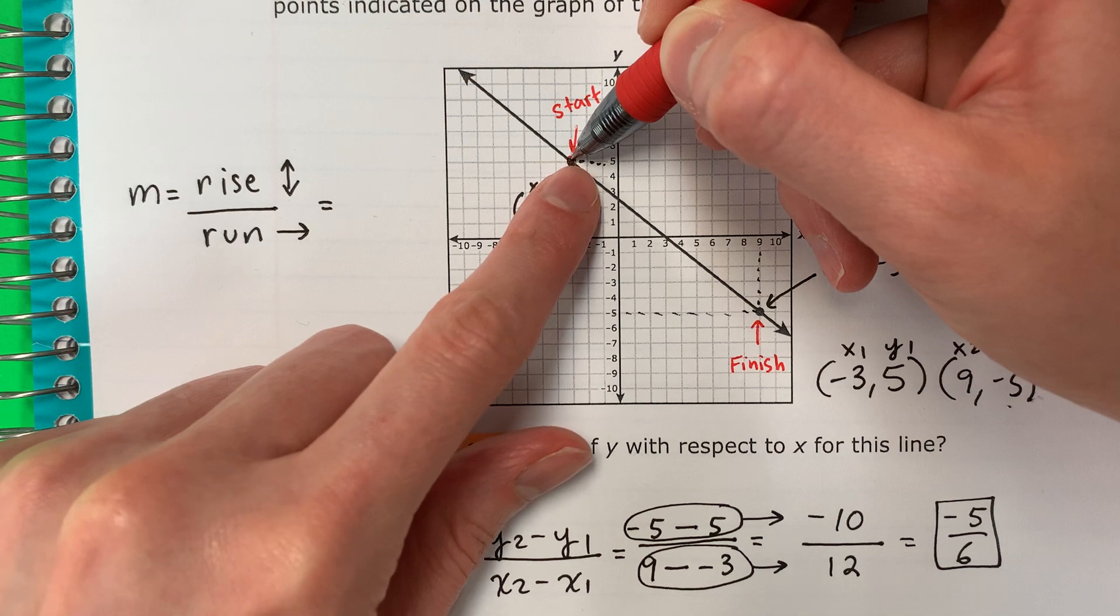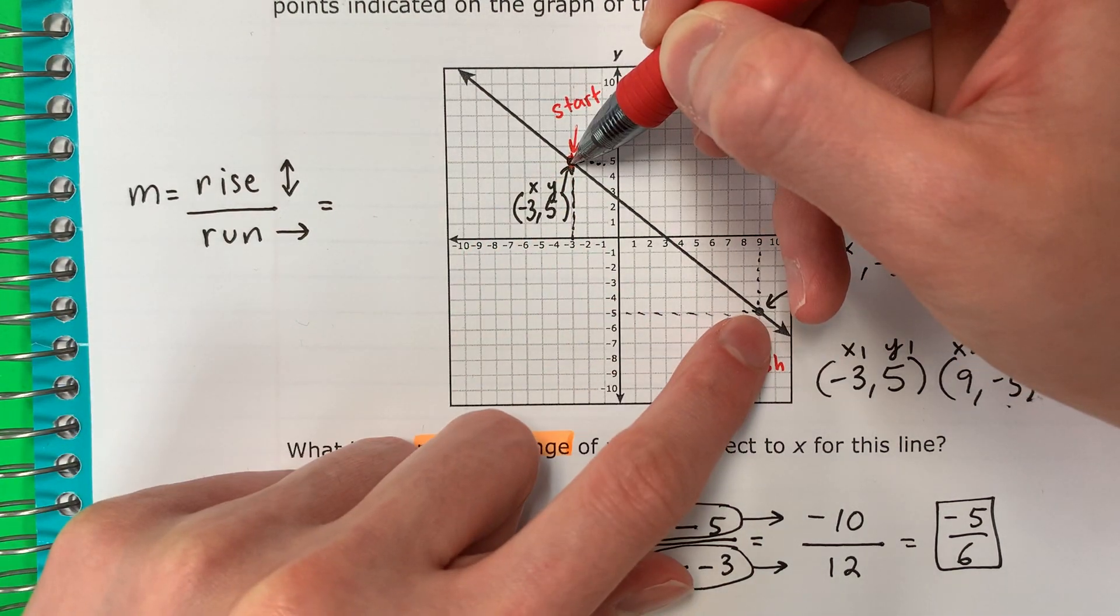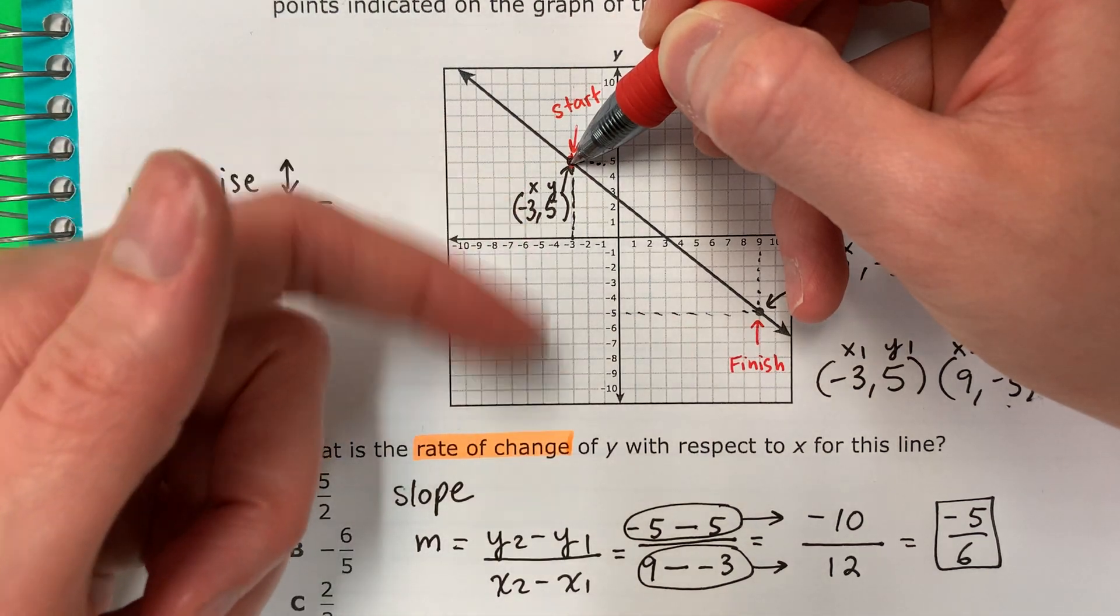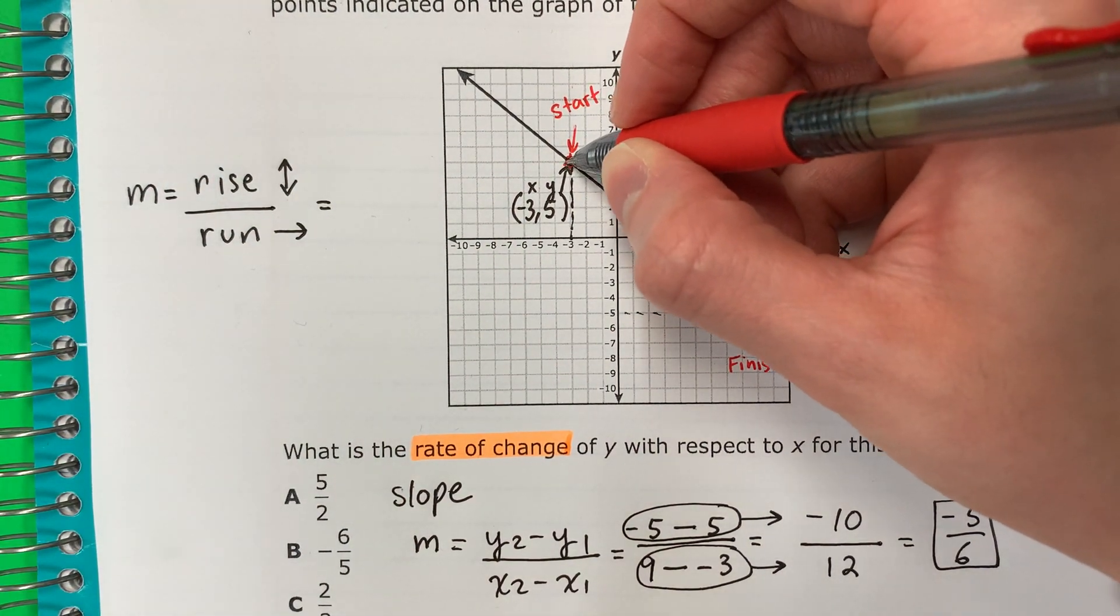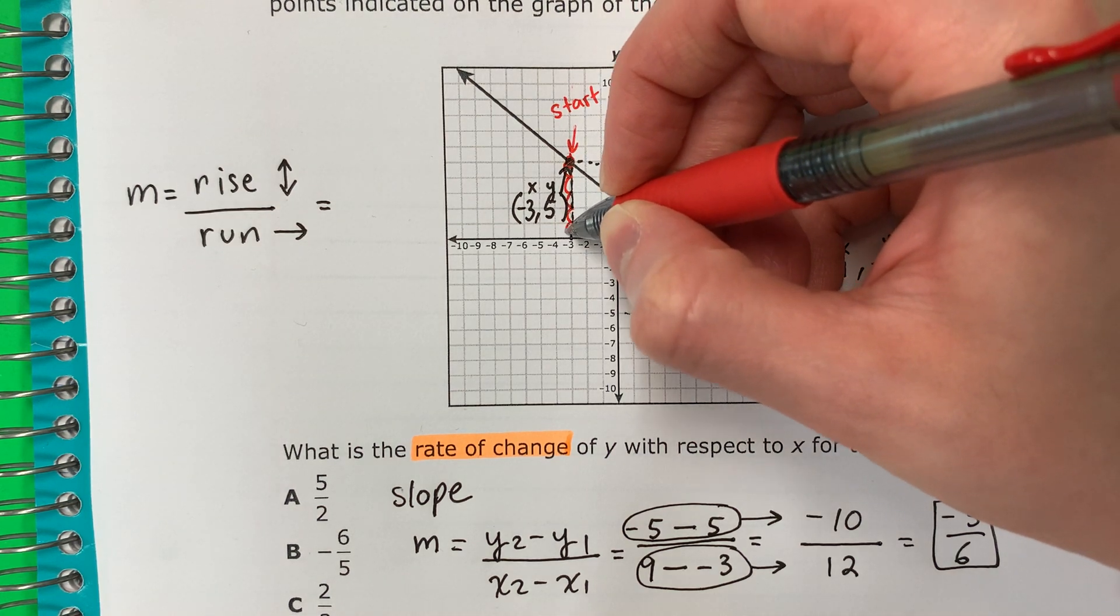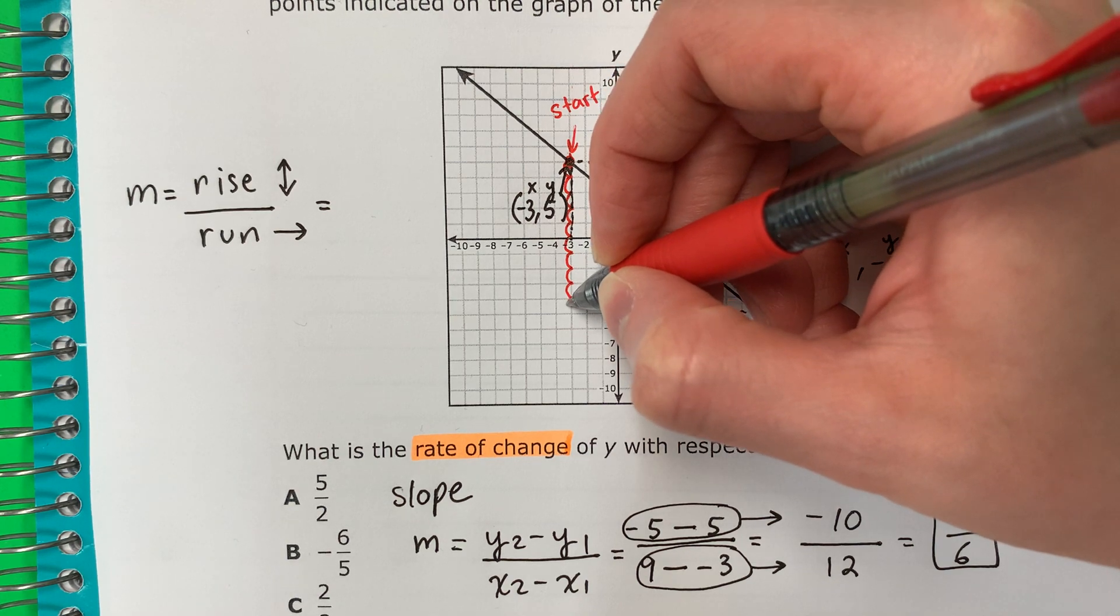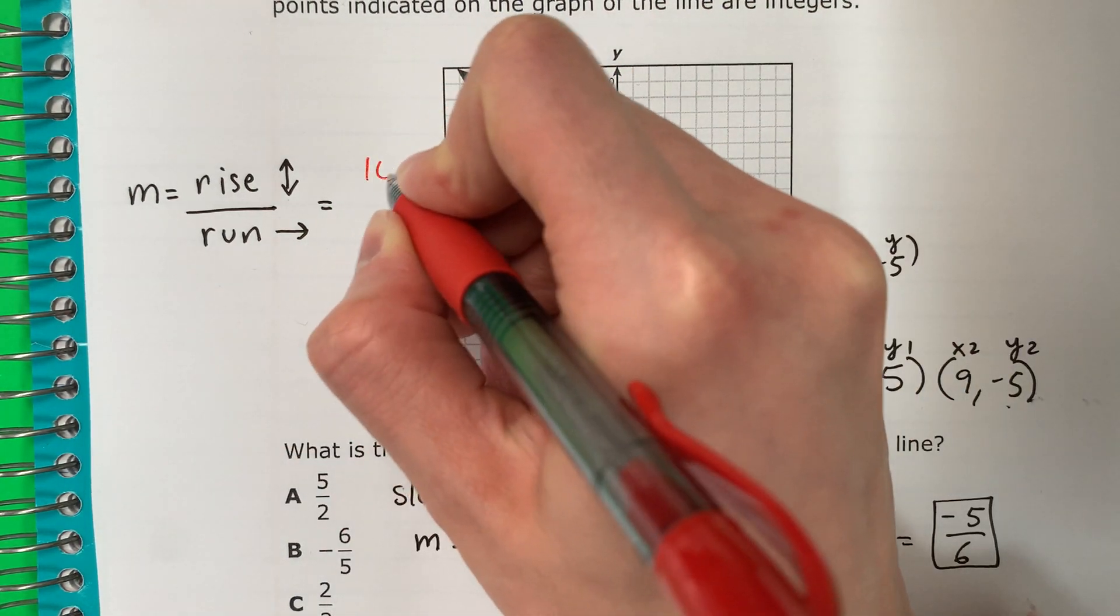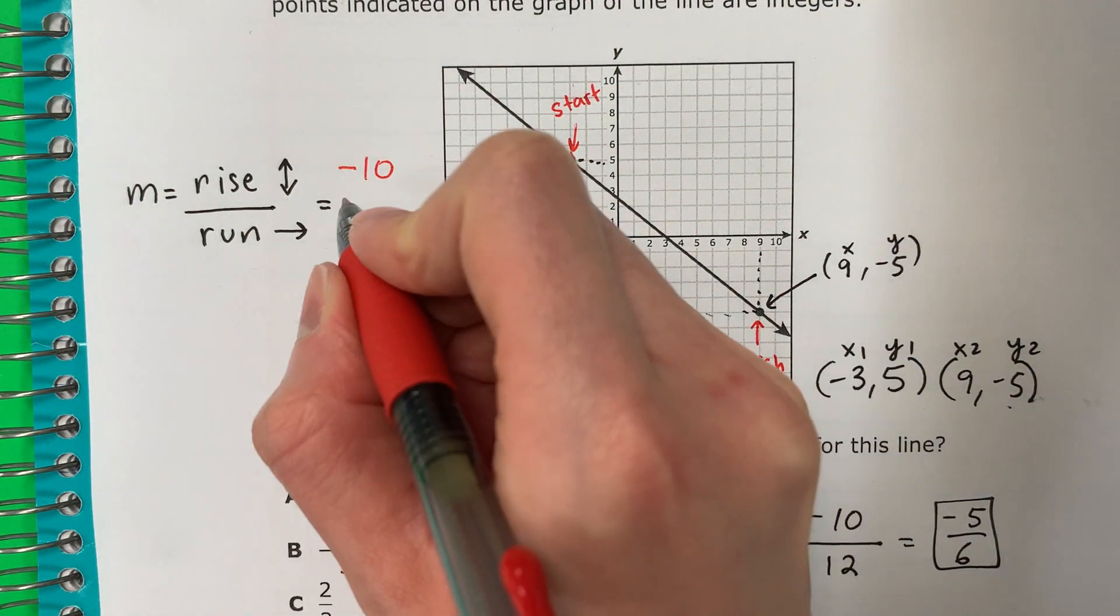So first, do I need to go up or down to finish here? I need to go down. Let's count how many. Zero, one, two, three, four, five, six, seven, eight, nine, ten. Ten down. Down is negative.